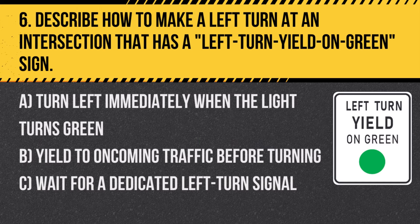Question 6: Describe how to make a left turn at an intersection that has a left-turn yield on green sign. A. Turn left immediately when the light turns green. B. Yield to oncoming traffic before turning. C. Wait for a dedicated left turn signal. Answer: B. Yield to oncoming traffic before turning. This sign indicates that you must yield to oncoming traffic and pedestrians before completing your left turn.